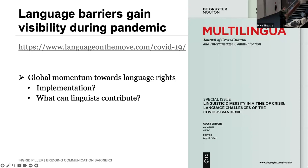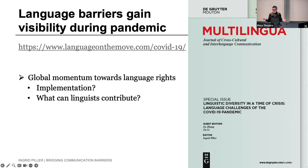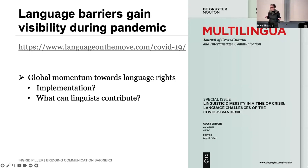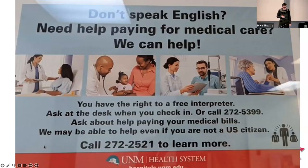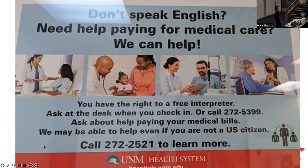Let's look at implementation. The first challenge for an institution wanting to provide language access rights is identifying which stakeholders need language support. Focusing mostly on healthcare examples: as a healthcare provider, how do you identify people who need language support? Let me give you an example from the US — a sign from the University of New Mexico Health System. Can you identify the problem with identifying a language barrier in this way?